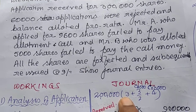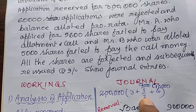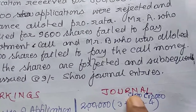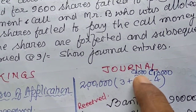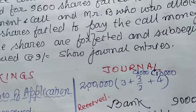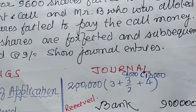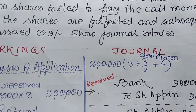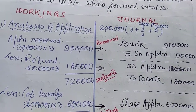The allotment scenario: Rs. 3 plus premium Rs. 2 equals Rs. 5. In case of allotment for Mr. A it is 8,000 shares, and in case of a call it is 8,000 plus 5,000 = 13,000 shares. Now we do the workings as well as the journal.